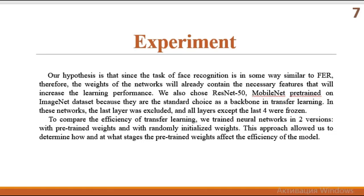In these networks, the last layer was excluded and all layers except the last four were frozen. To compare the effectiveness of transfer learning, we trained neural networks in two versions: with pre-trained weights and with randomly initialized weights. This approach allows us to determine how and at what stage the pre-training affects the efficiency of the model.